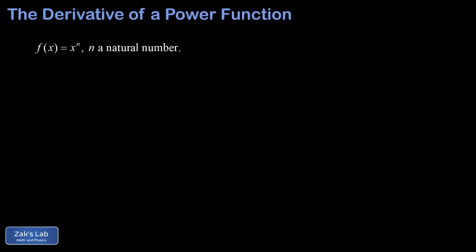In this video we're going to learn how to compute the derivative of a power function — in other words, a function of the form x to the n — and we're only covering the case where n is a natural number, in other words a positive integer. We will eventually be able to extend our results to zero, negative integers, and in fact any rational or real number, but this is our starting point.